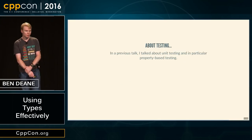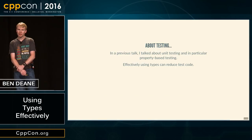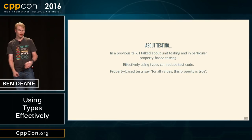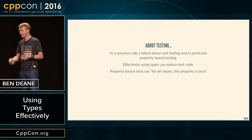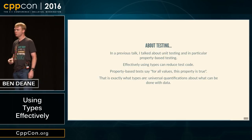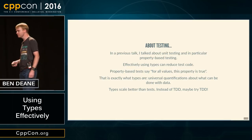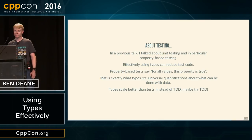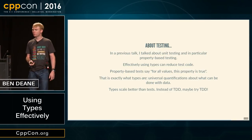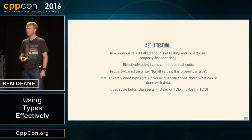A little bit about testing. Last year I talked about unit testing and in particular property-based testing — I have a little library that does that. If you get your types right, property-based tests effectively say 'for all values, this property is true.' That is exactly what types are — types are universal quantifications about what you can do. Types scale better than tests. So instead of test-driven development, try type-driven development. C++'s type system isn't yet quite powerful enough to say goodbye to all tests, but it's certainly already powerful enough that if we use it effectively, we can reduce some of the drudgery of writing tests — by making the compiler enforce it instead.